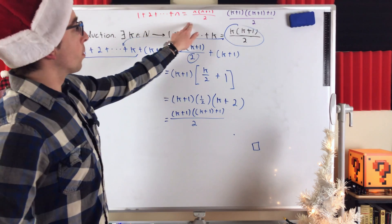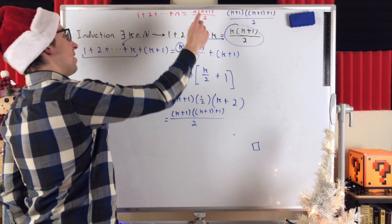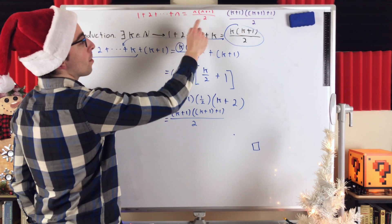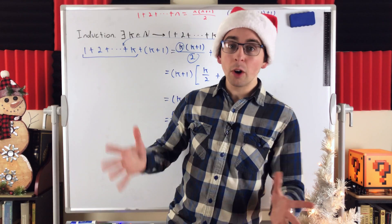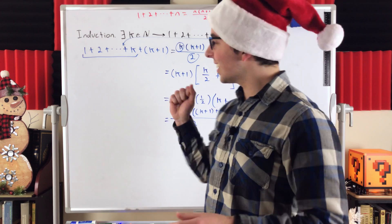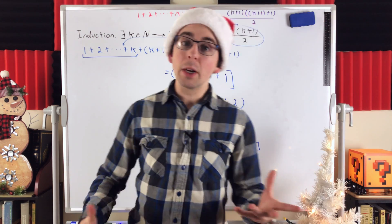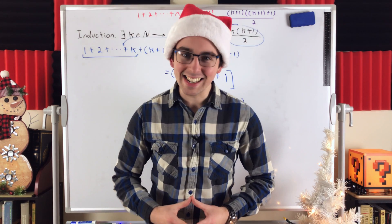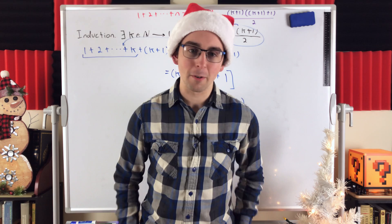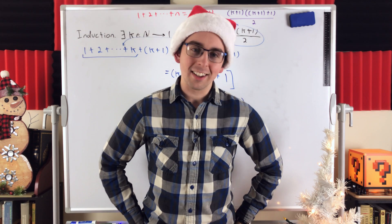The sum of the first n counting numbers is n times the next counting number, n plus 1, divided by 2. So, I hope this video helped you understand this classic induction proof. Let me know in the comments if you have any questions, need anything clarified, or have any video requests. Thank you very much for watching. I'll see you next time. And be sure to subscribe for the swankiest math lessons on the internet.